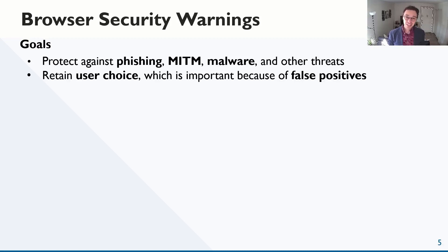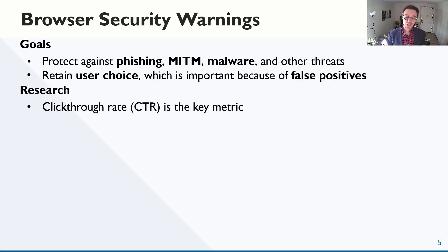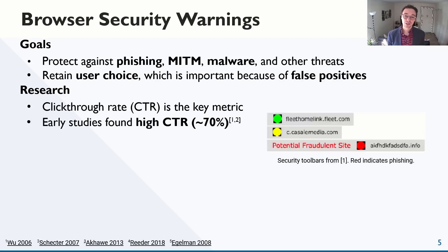Browsers can often detect dangerous websites, but don't always want to block them because false positives can occur due to misclassification or misconfigurations. Warnings provide deterrence while allowing for user override when necessary. The key behavioral metric devised by security researchers was click-through rate — the proportion of warning encounters where users continue past the warning. And by this metric, early security warnings categorically failed.